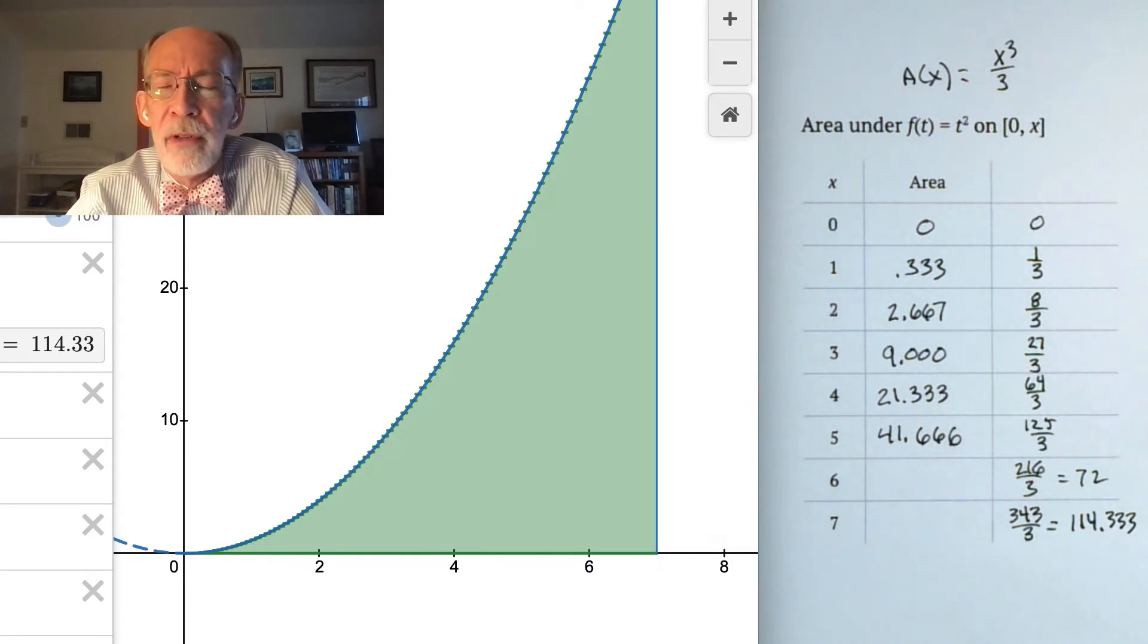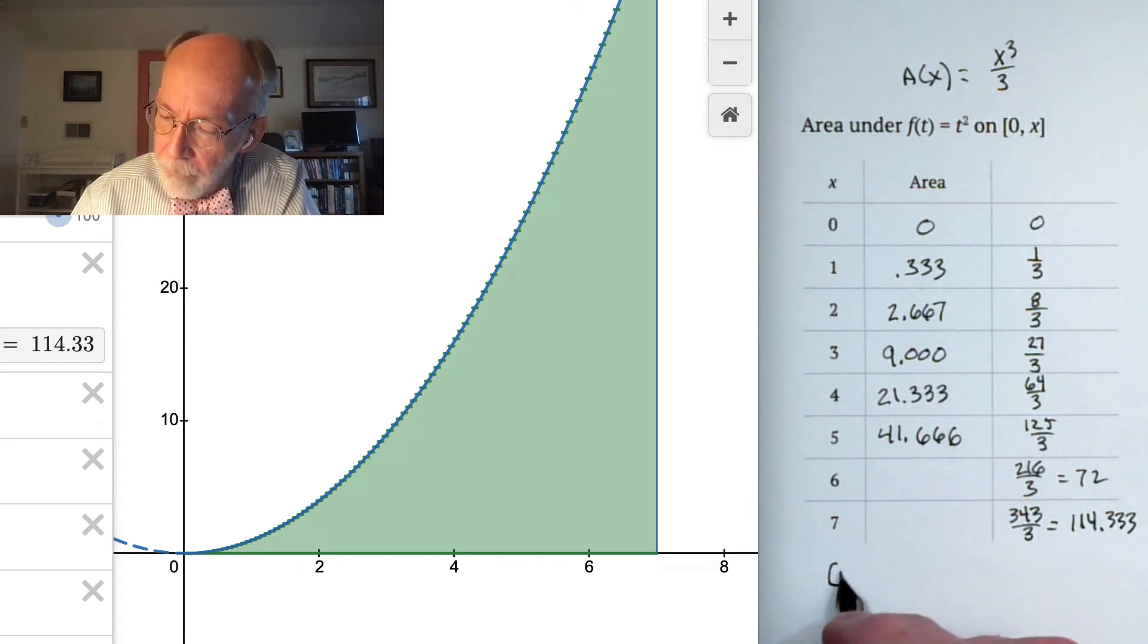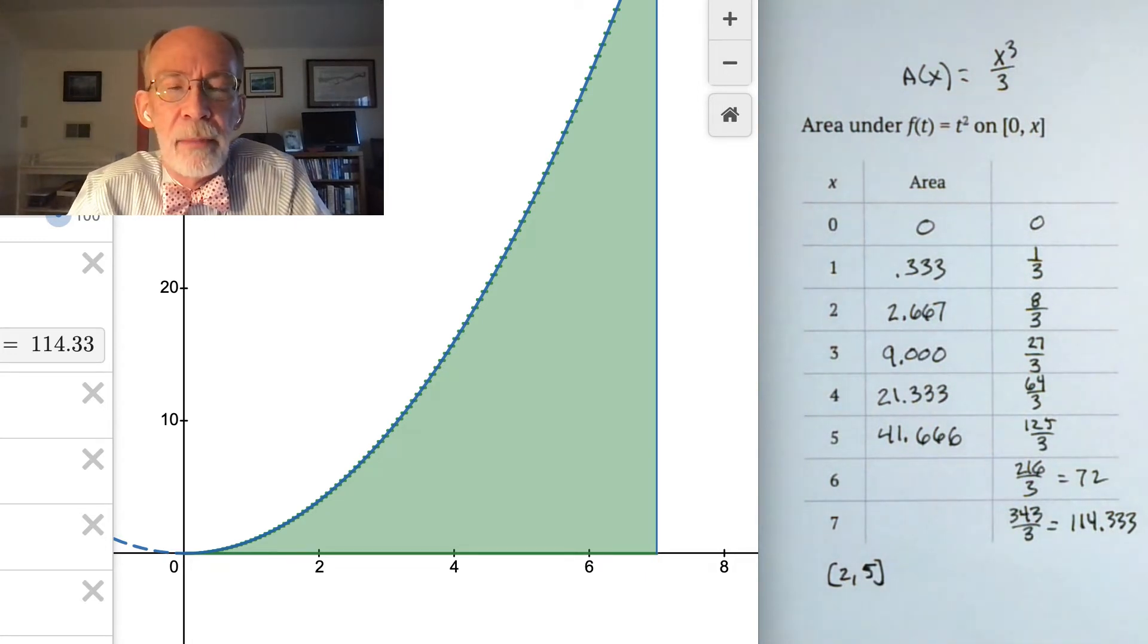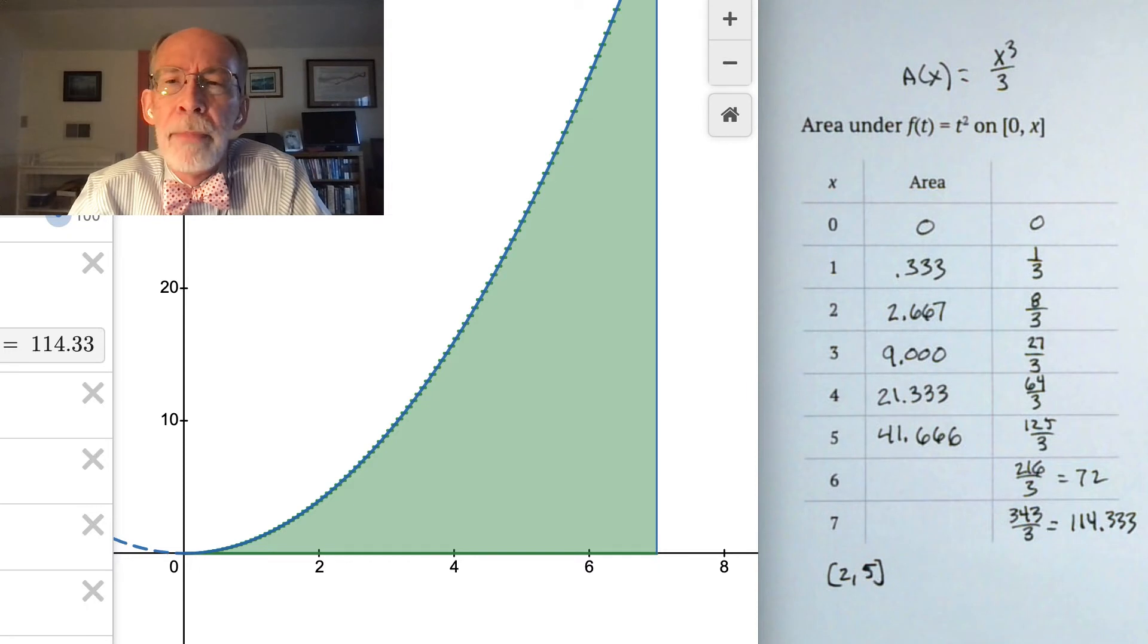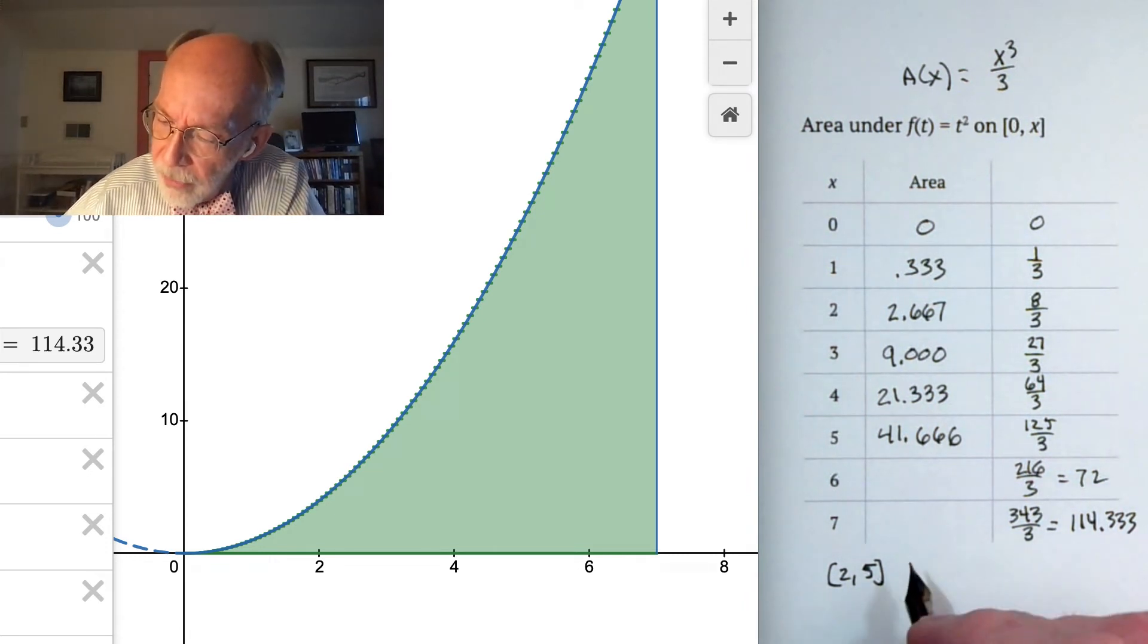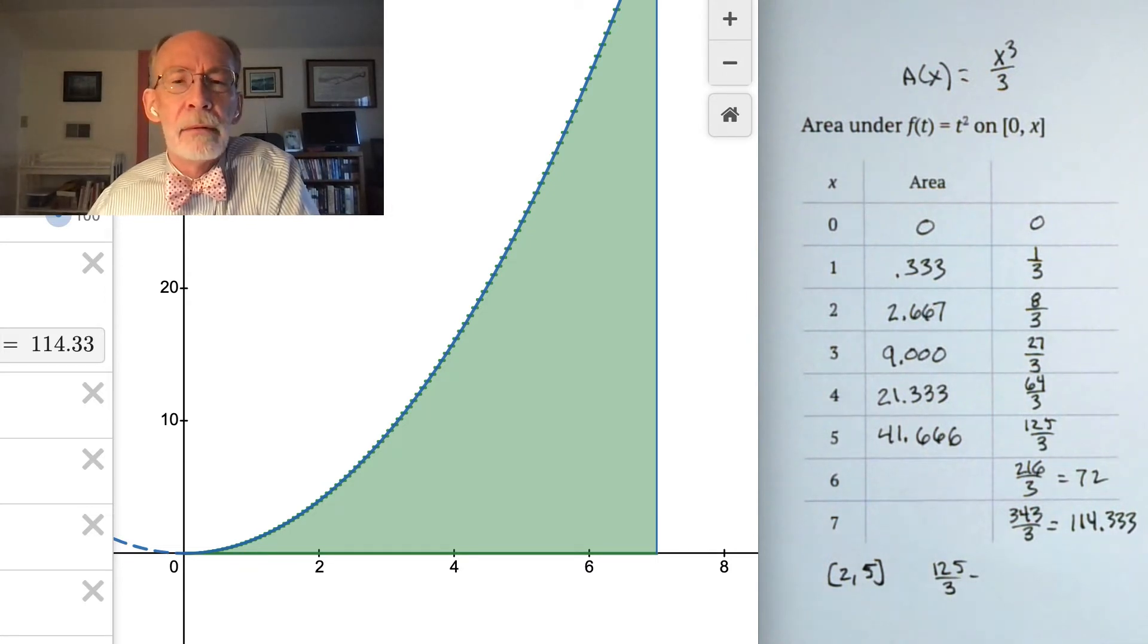Before we leave this function, let's explore one more quick little aspect of it. Suppose we wanted to look instead from 0 to some place, let's say from 2 to 5. We want to ask, what is the area under this function from x equals 2 to x equals 5, rather than from x equals 0? Well, it ought to be the area from 0 to 5, which is 125/3, minus the area from 0 to 2, which is 8/3.